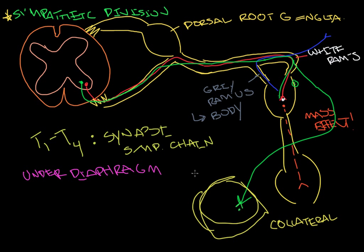So hopefully that was nice. Remember, if it's under the diaphragm, it does not synapse in the chain. And if it's T1 to T4, it does synapse in the chain. And that's how you get the mass effect. So adrenaline pumping, eyes dilated, and all that jazz. Alright.